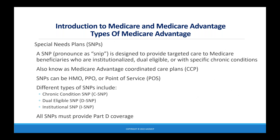A Special Needs Plan, or SNP, is designed to provide targeted care to Medicare beneficiaries who are institutionalized, dual eligible — meaning eligible for both Medicare and Medicaid — or have specific chronic conditions. Also known as Medicare Advantage Coordinated Care Plans or CCP. SNPs can be HMO, PPO, or point of service. Types include Chronic Condition SNPs (CSNP), Dual Eligible SNPs (DSNP), and Institutional SNPs (ISNP). All SNPs must provide Part D coverage.